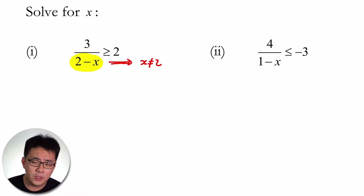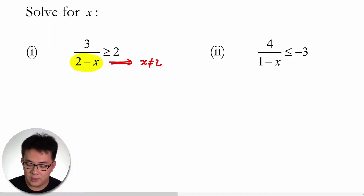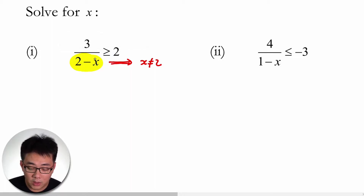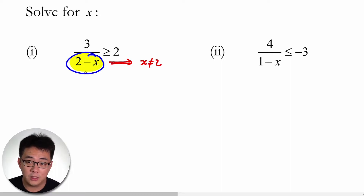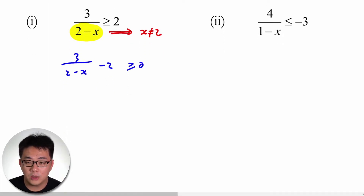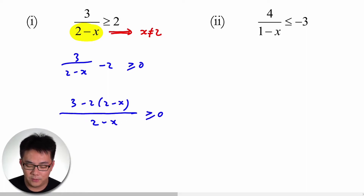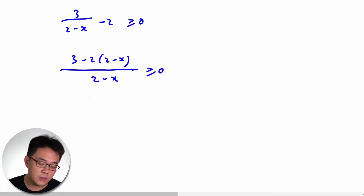There are a few ways to solve this — you could use a graphical method or an algebraic method, but I prefer the algebraic method because it's easier. What we're going to do is move the minus 2 to the other side and make it equal to 0. Once you've done that, this becomes 3 minus 2(2 minus x) over (2 minus x) equals 0.